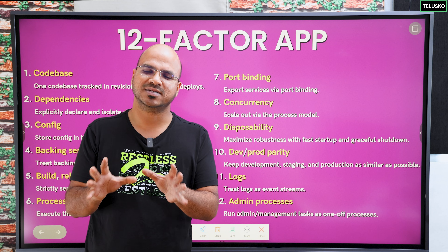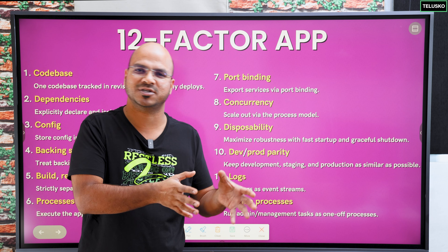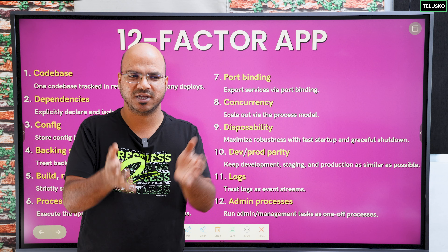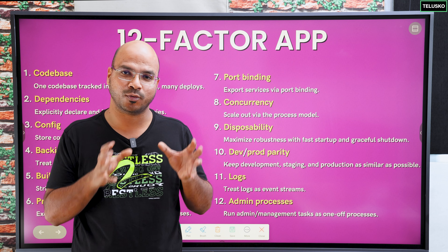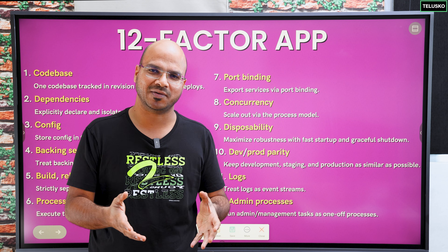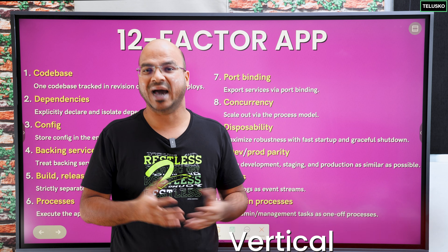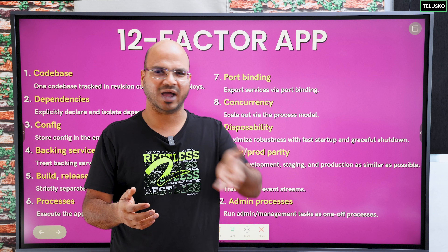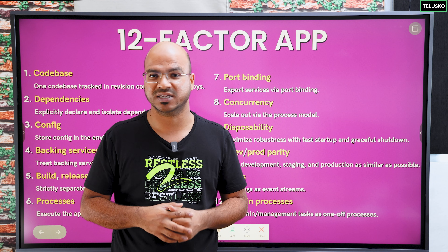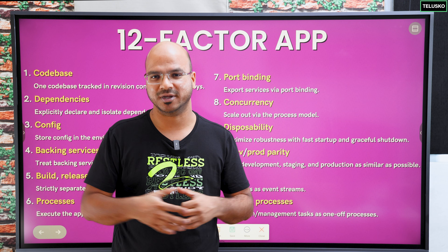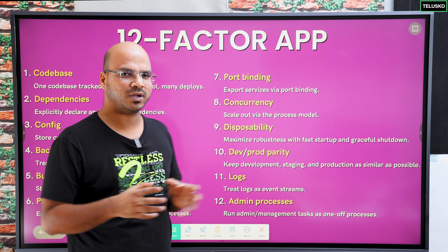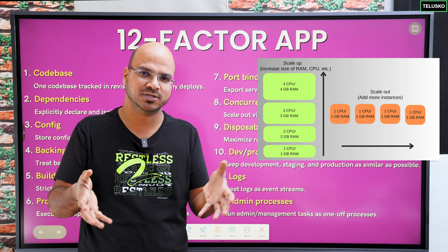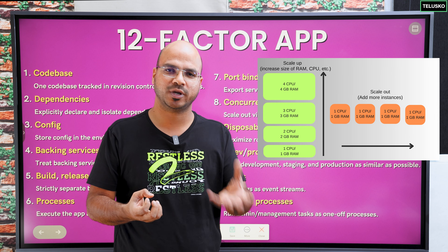The eighth factor is concurrency. Different programming languages have different ways of multi-threading and multi-processing. In Java there is multi-threading, but it can scale only to the machine's limit — that's vertical scaling, like upgrading from an i7 to an i9 with more RAM, but there's still a ceiling. The concurrency model says: instead of vertical scaling, go for horizontal scaling — scale out. Use multiple instances of the same service rather than one powerful machine.